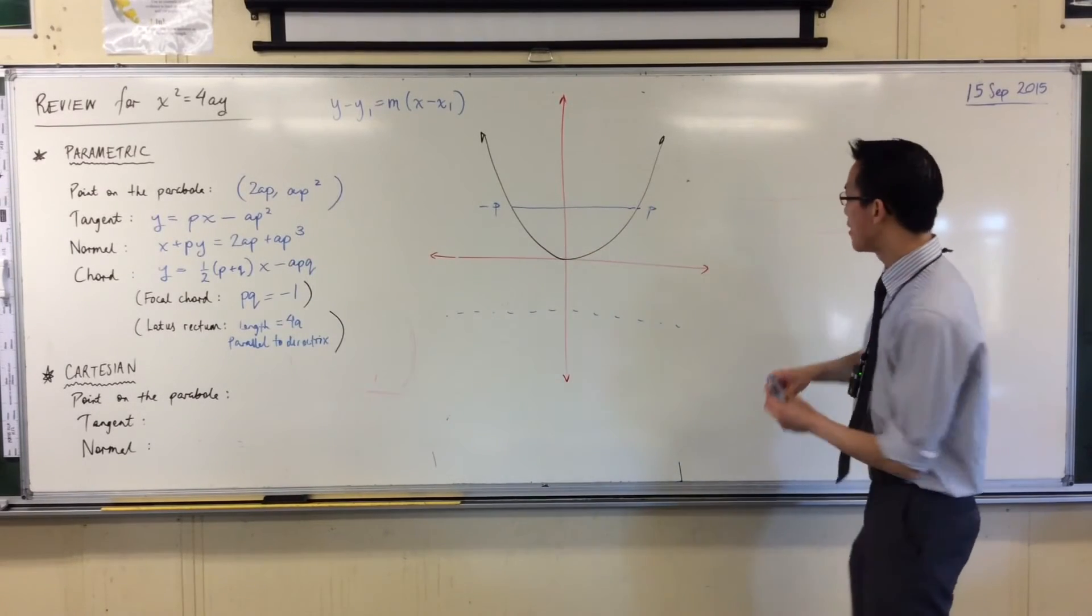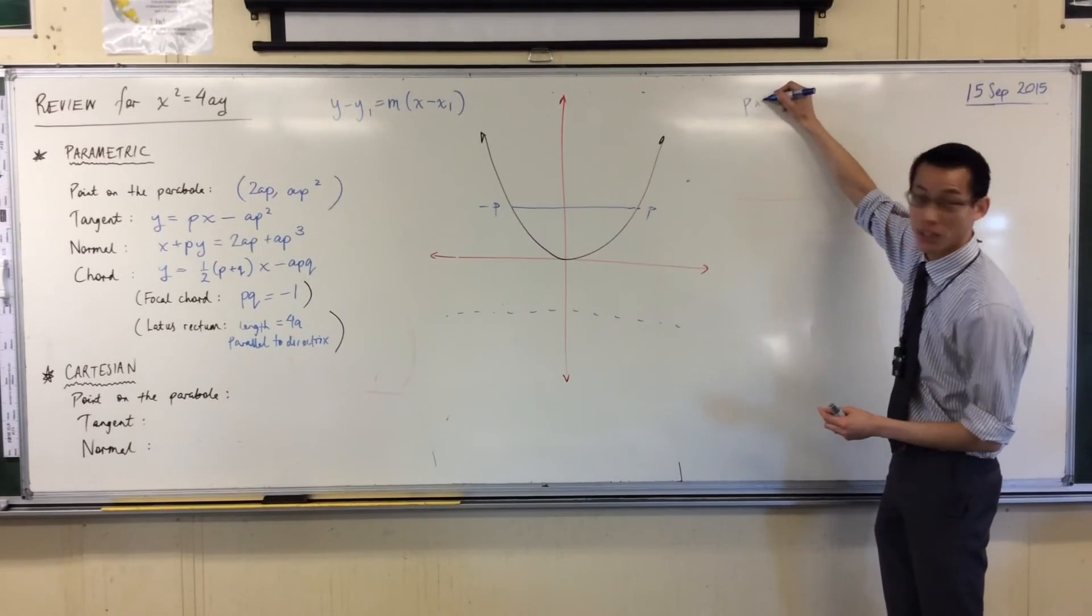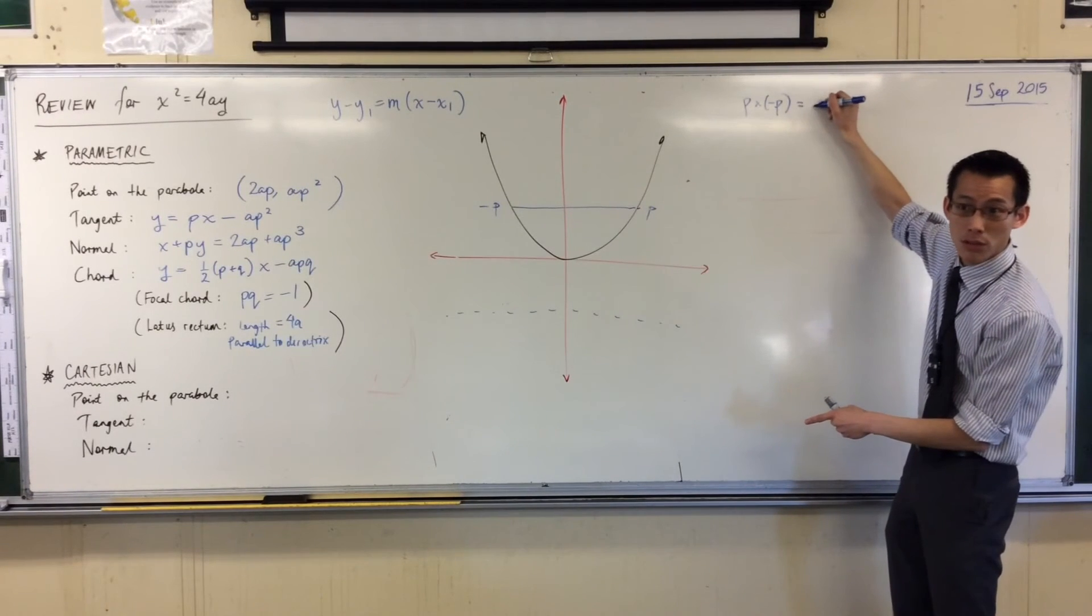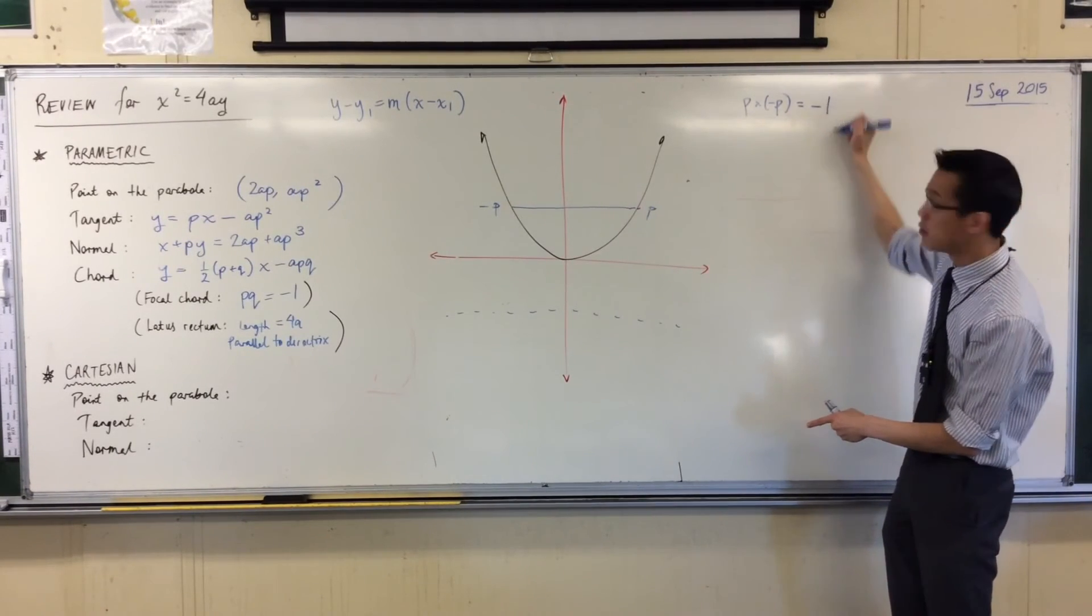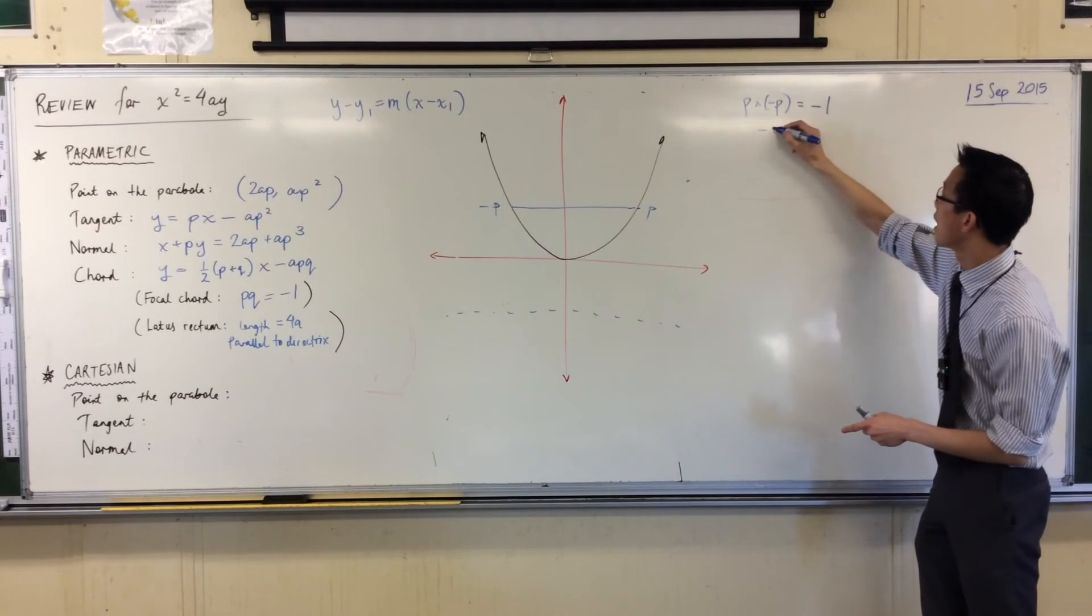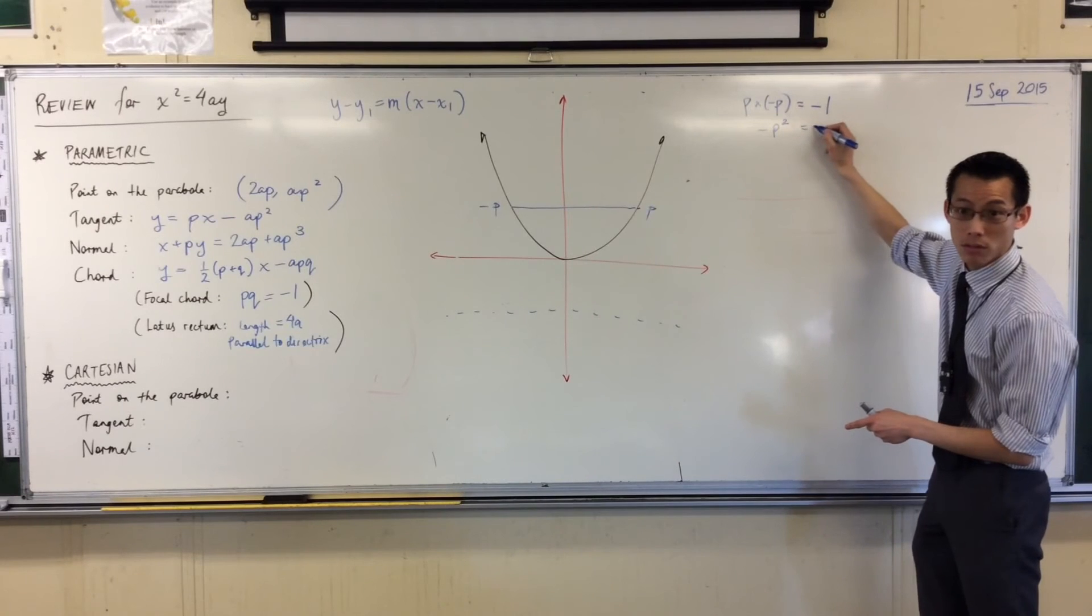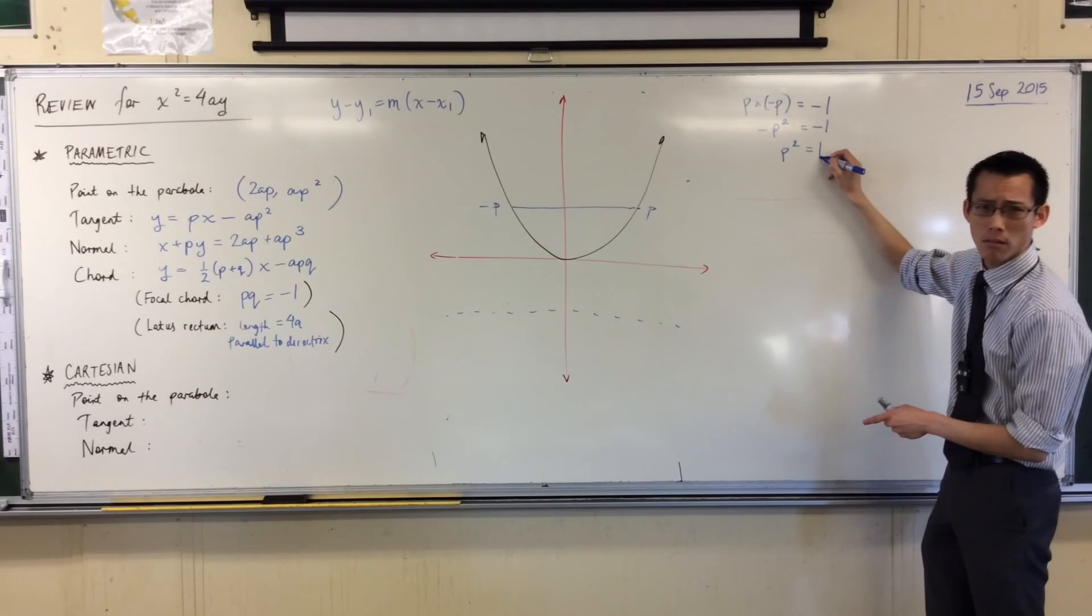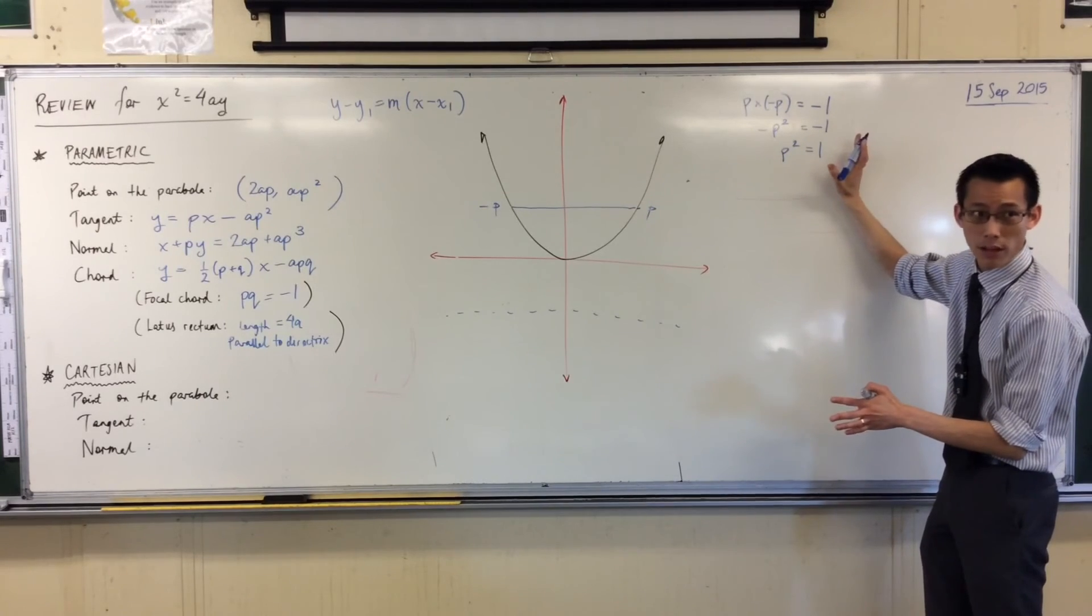But if P times Q, which you just told me is negative P, if they're equal to negative one, are you following with me? I've got minus P squared equals minus one, so P squared equals one. Did I do everything right, does that look okay?